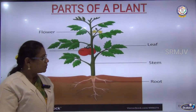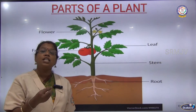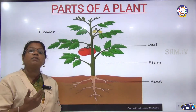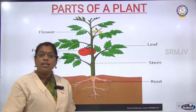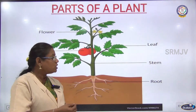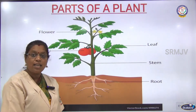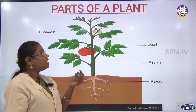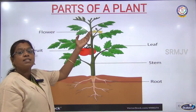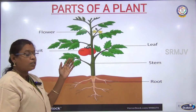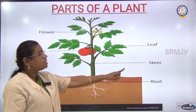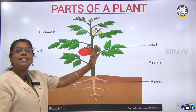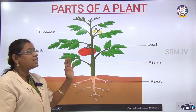Look at this picture. When you plant a new seed inside the soil, the first part which develops is the root. The root slowly grows into a stem, then we can see the leaves, later we can see flowers, and these flowers will change into fruits. So root, stem, leaf, flower and fruits are all the main parts of a plant.